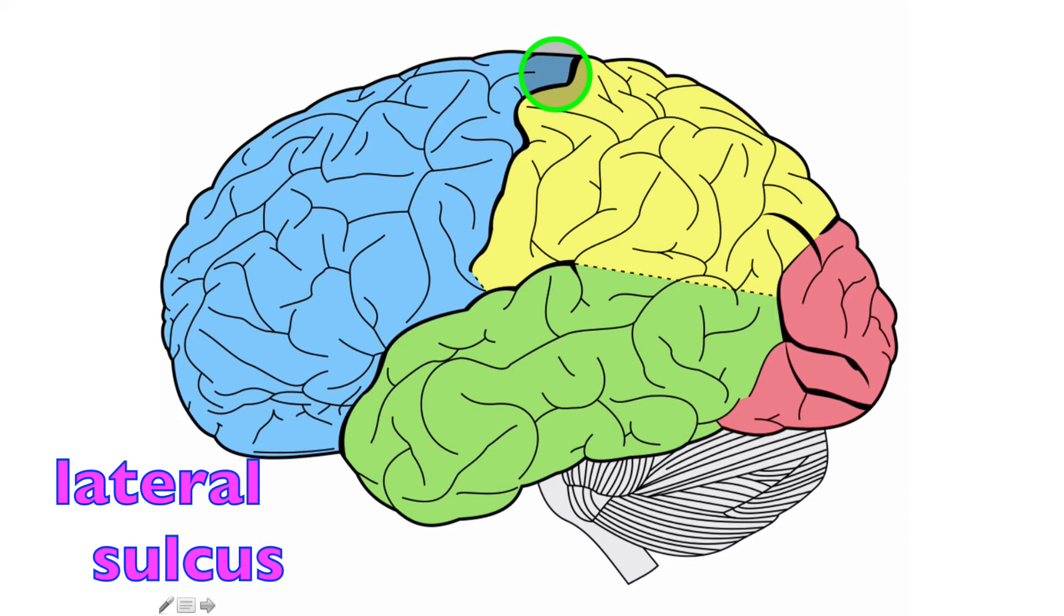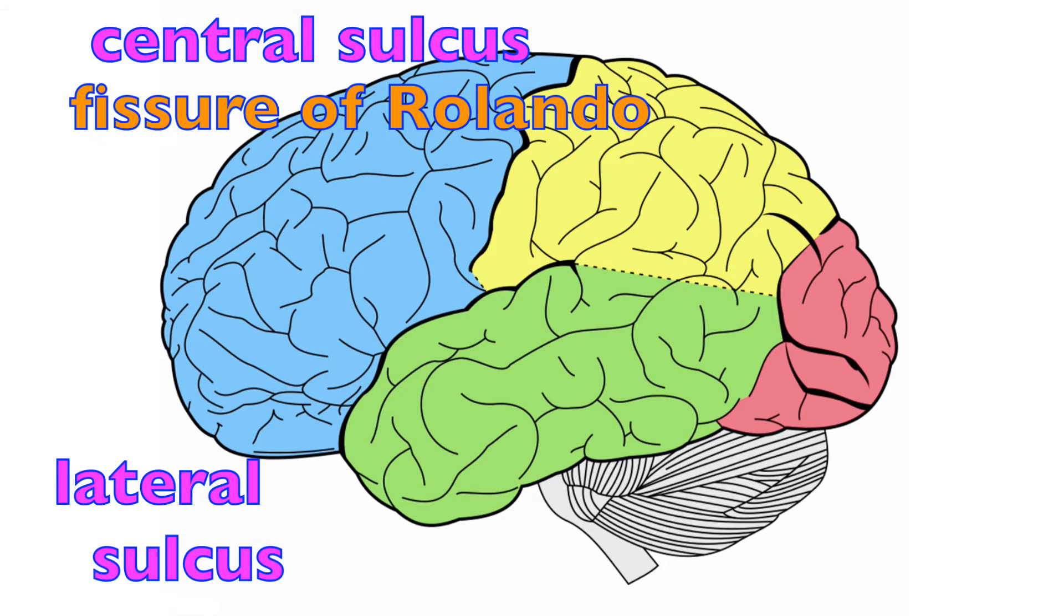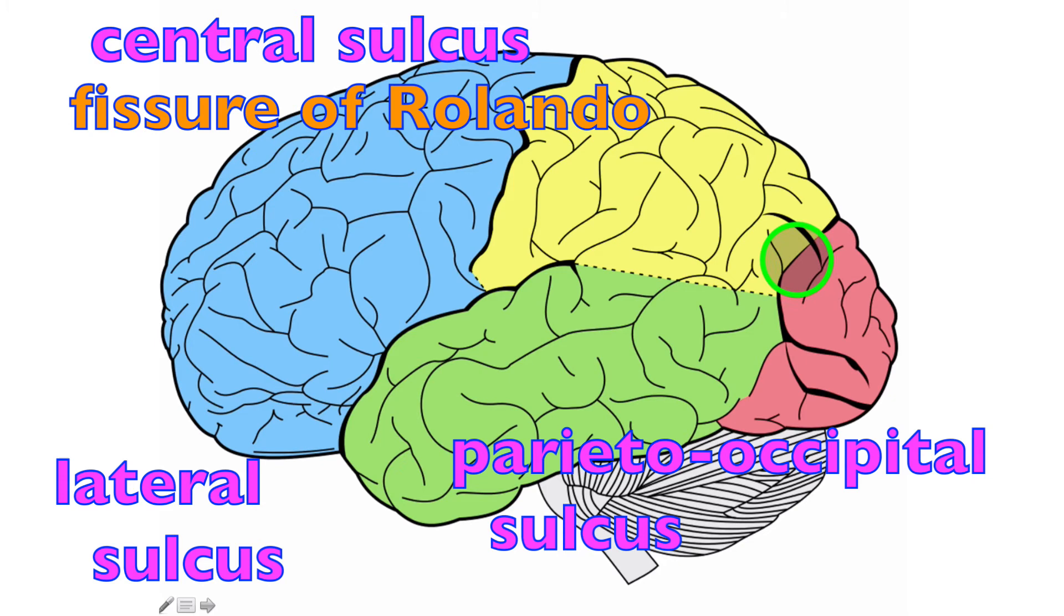Just like this black line here, which represents the central sulcus, otherwise known as the fissure of Rolando, that separates the parietal lobe from the frontal lobe. And then separating the parietal lobe from the occipital lobe is the parietal-occipital sulcus or fissure.